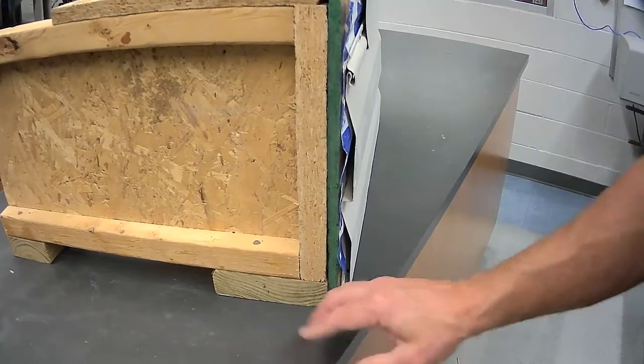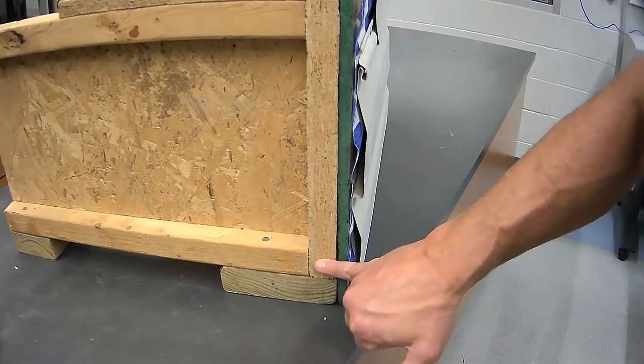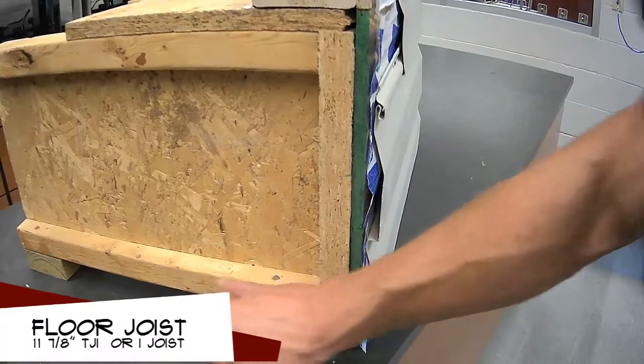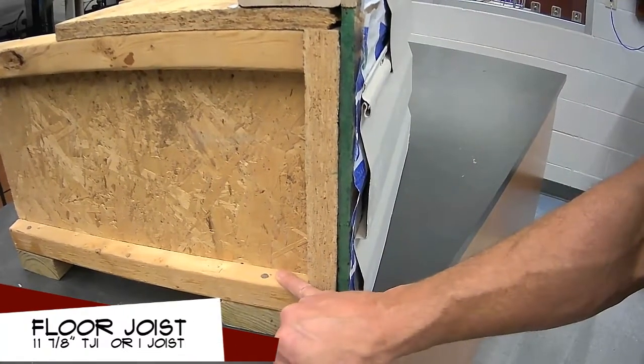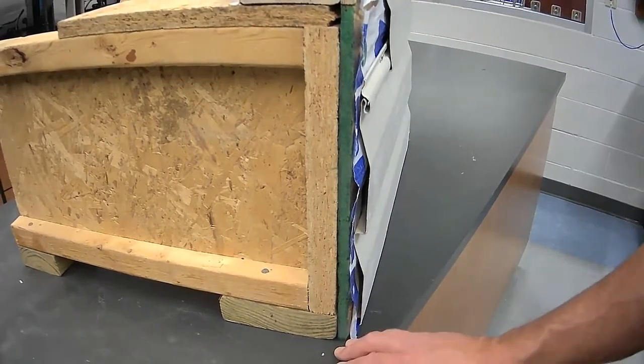As we start coming up from the foundation, we have two pieces of material here on the inside. These are called TJI floor joists. This is a floor joist system that is an engineered piece of lumber.